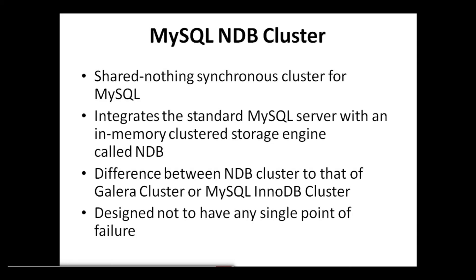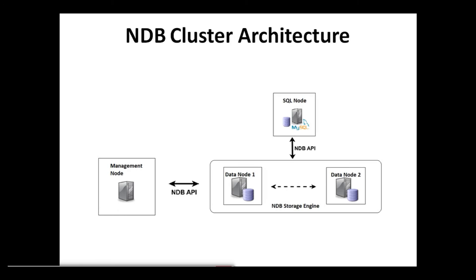The NDB Cluster is designed to have no single point of failure. In a shared-nothing system, each component is expected to have its own memory and disk, and the use of shared storage mechanisms such as network shares, network file systems, and SANs is not recommended or supported. The NDB Cluster architecture consists of three different node types: the management node, the data node, and the SQL node.